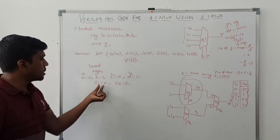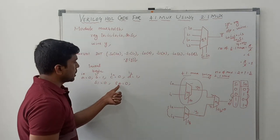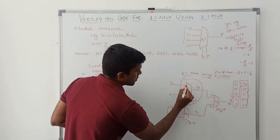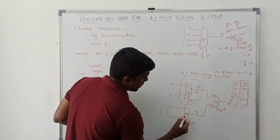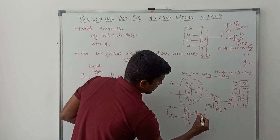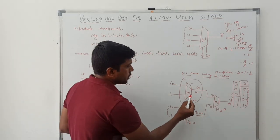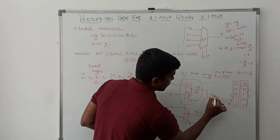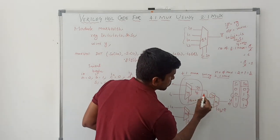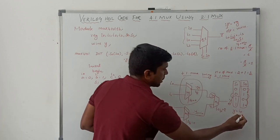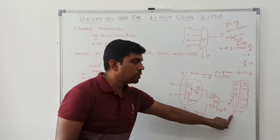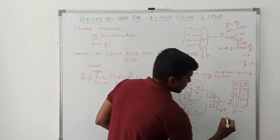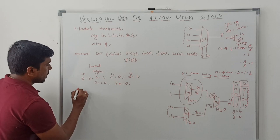Now with selection line s1=0 and s0=0: in this mux, i0 is connected to y0, and i2 is connected to y1, so y1 equals i2. These two signals are connected to mux3. Since s1=0, y0 is selected. The corresponding value of y0 is i0, so i0 is connected to y. Since i0 corresponds to a, and a=0, the output y equals 0.